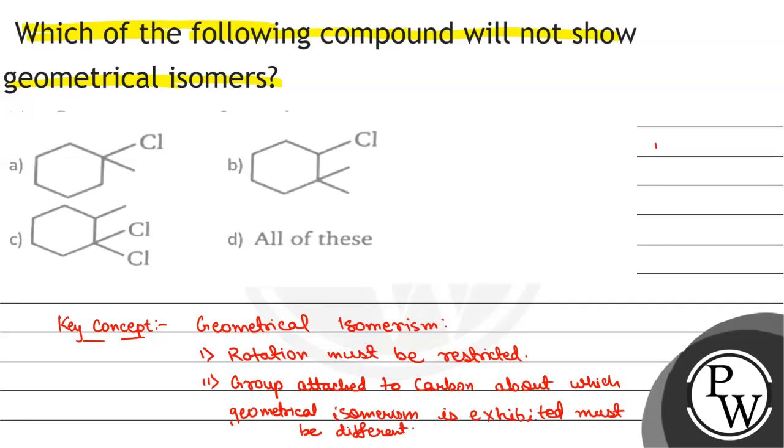And third one, compound should be planar. Now, we will see that in all structures, first or third one is satisfied, but second one is not satisfied, so none will show geometrical isomerism.